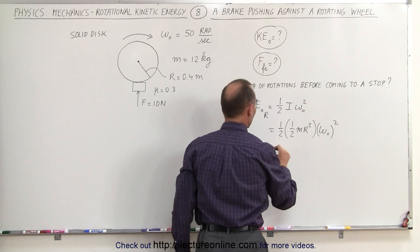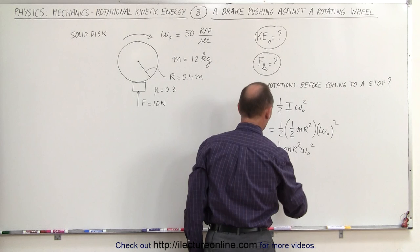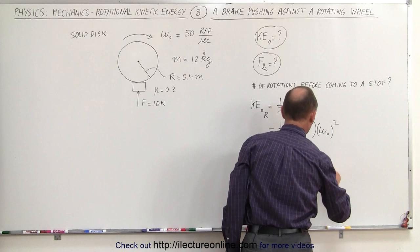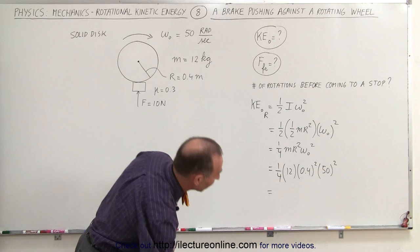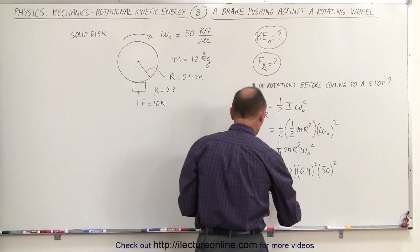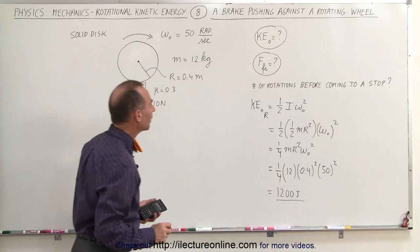Simplifying, this equals one quarter m r squared times omega initial squared — or one quarter times m, which is 12 kilograms, times the radius 0.4 squared, times omega initial which is 50, quantity squared. That gives us the initial kinetic energy: 12 times 0.4 squared divided by 4, times 2500, equals 1200 joules of initial kinetic energy.